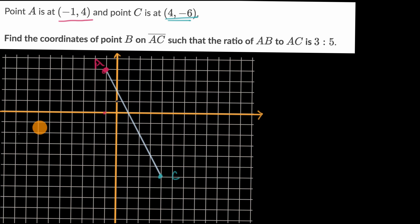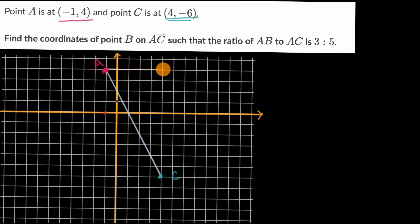So let's think about the X direction first. We are going from X equals negative one to X equals four. Our change in X is five. And so if we want to go three fifths of that, three fifths of five is three. So that is going to be B's X coordinate.